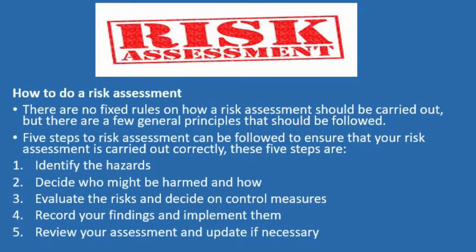With COSHH you must carry out a risk assessment. There are no fixed rules on how to carry out a risk assessment, but there are a few general principles that should be followed. Follow these five steps to ensure your risk assessment is carried out correctly: 1. Identify the hazards. 2. Decide who might be harmed and how. 3. Evaluate the risk and decide on a control measure. 4. Record your findings and implement them. 5. Review your assessment and update if necessary.